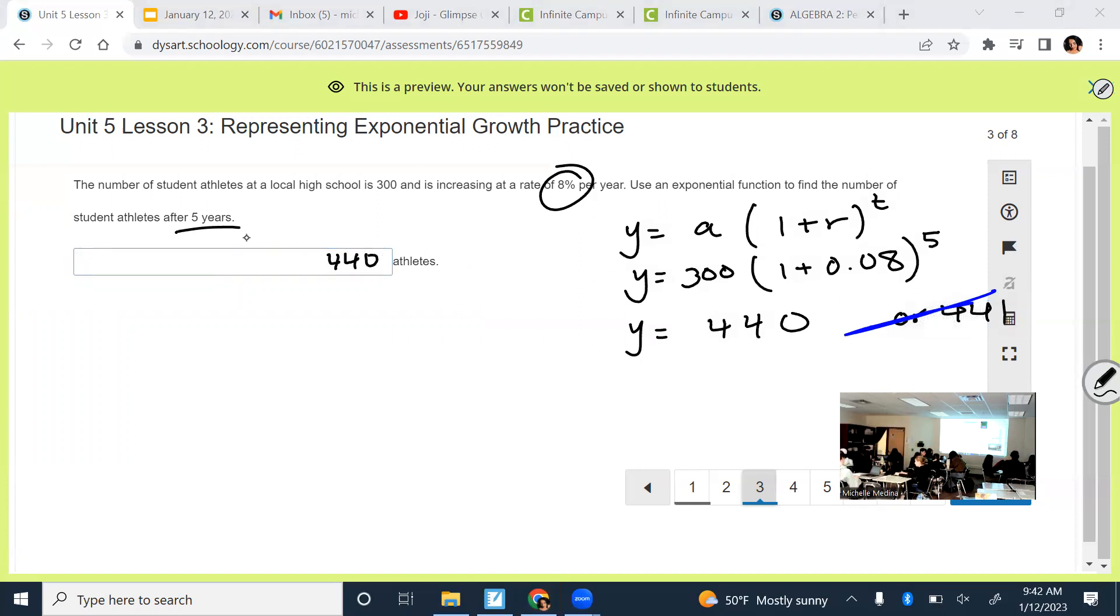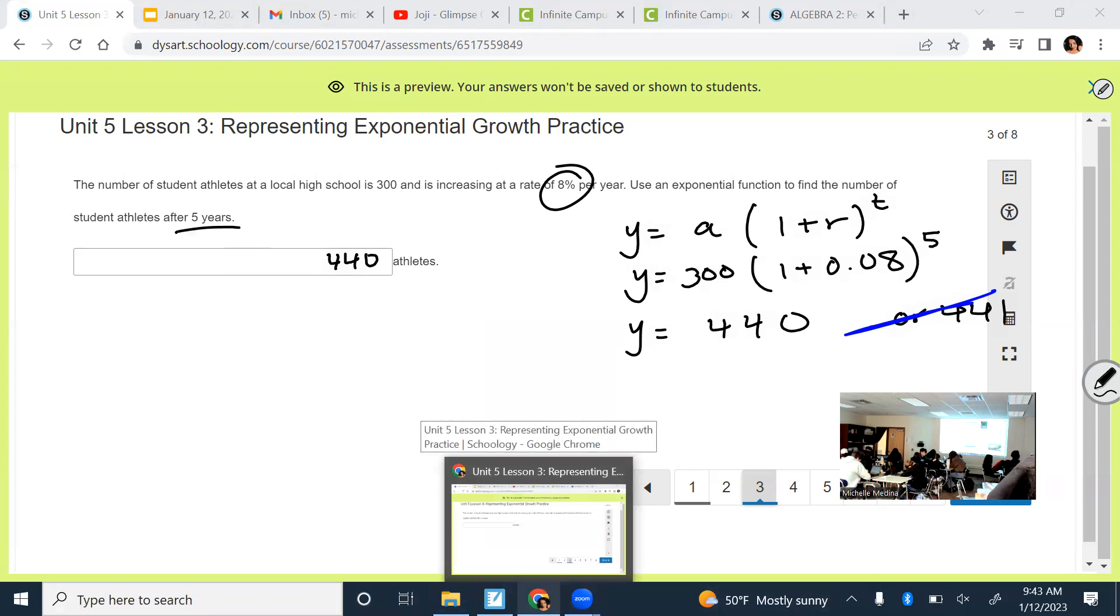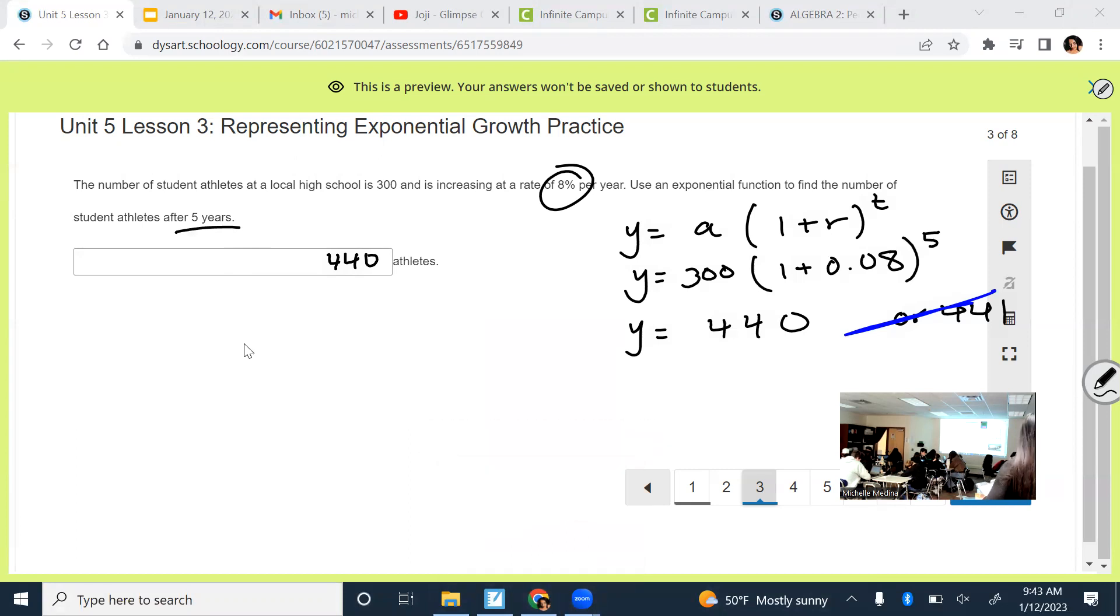In situations where you're counting people or things that can't be decimals, you just automatically round down to the whole number. So I know that's weird because ordinarily you round up if it's 0.7, but not when it's people. Make sense? We're going to move on to today's lesson. Any questions before we move on?